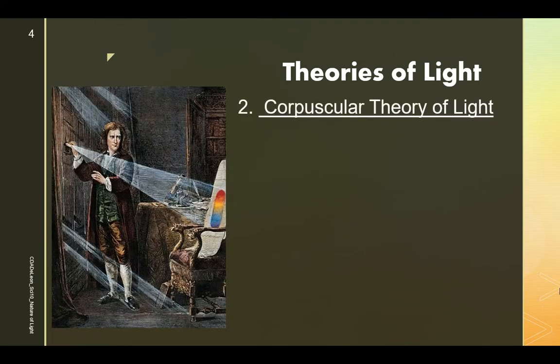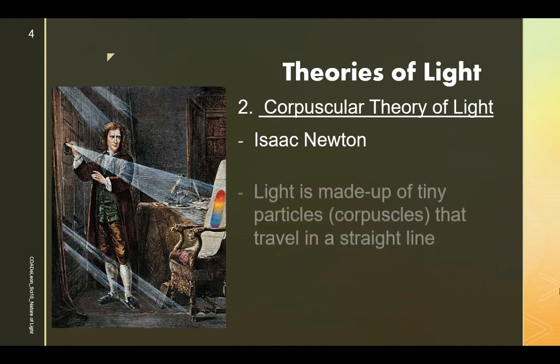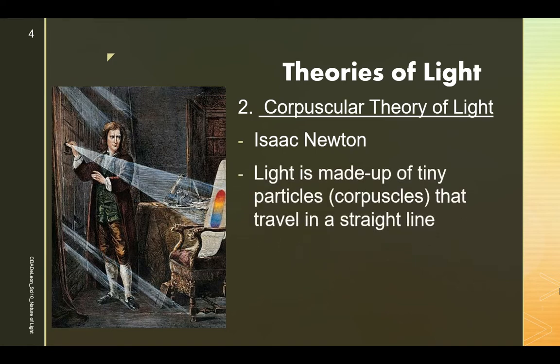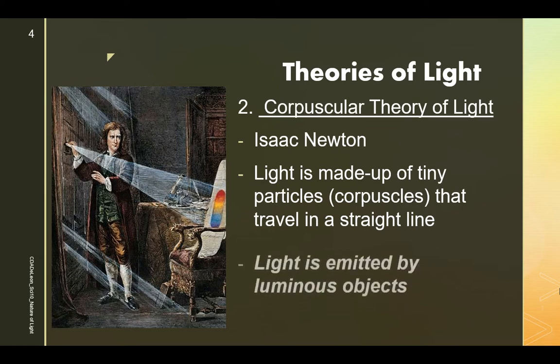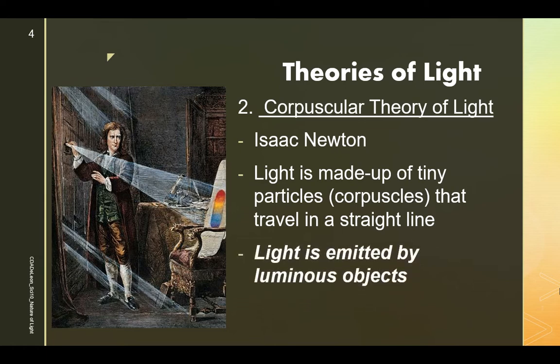The second theory of light is according to Sir Isaac Newton. Isaac Newton argued that the geometric nature of reflection and refraction of light could only be explained if light were made of particles, referred to as corpuscles, because waves do not tend to travel in straight lines. In short, light is made up of tiny particles or corpuscles that travel in a straight line, and light is emitted by luminous objects.